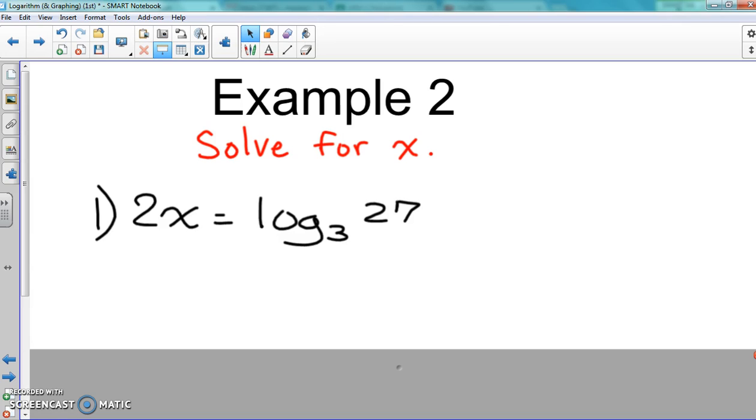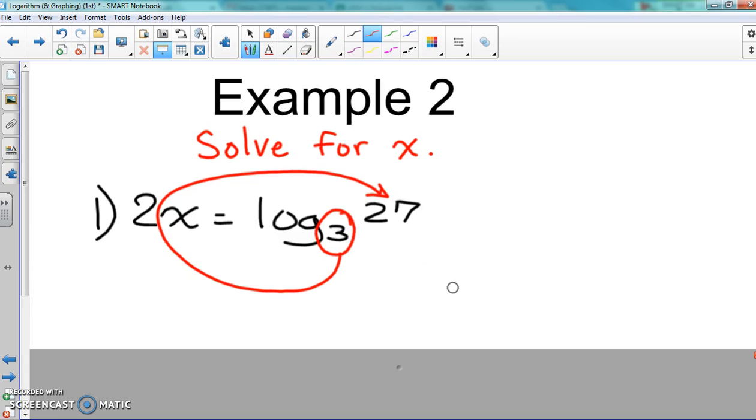So example two, we're gonna solve for X, but we're still gonna use our swoosh. Bring it around town. We start with our base number, bring it around town. So we have three to the two X power equals 27.